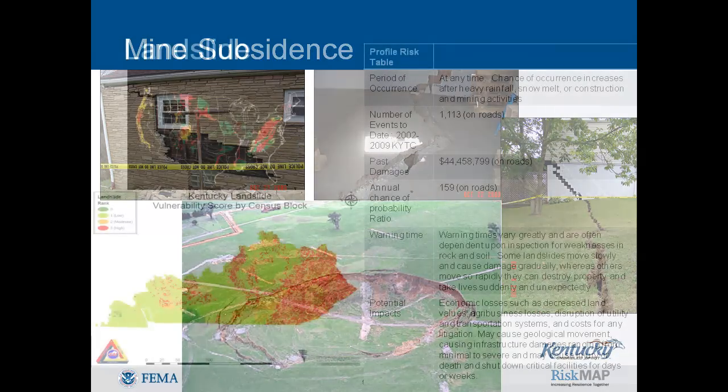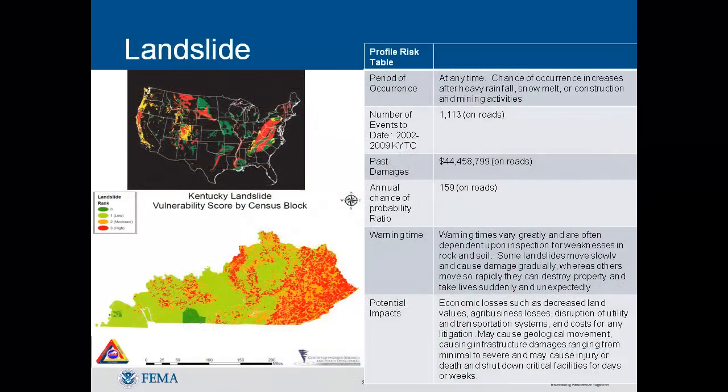A landslide or landslip is a geological phenomenon which includes a wide range of ground movement, such as rock falls, deep failure of slopes, and shallow debris flows, which can occur in offshore, coastal, and onshore environments. Although the action of gravity is the primary driving force for a landslide to occur, there are other contributing factors affecting the original slope stability. Typically, preconditional factors build up specific subsurface conditions that make the area or slope prone to failure, whereas the actual landslide often requires a trigger before being released.